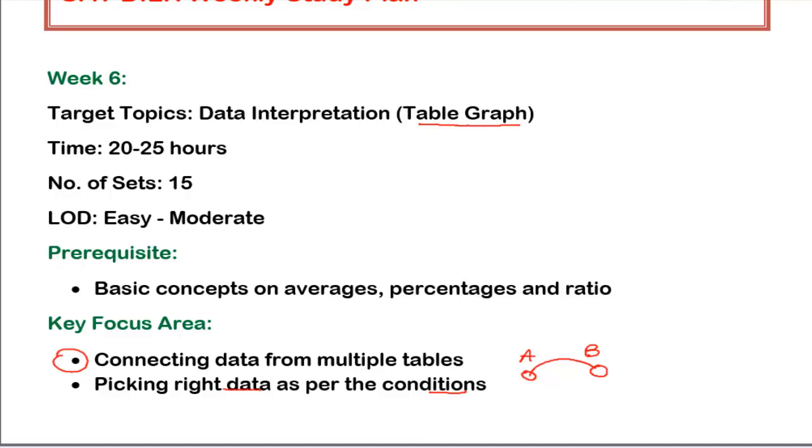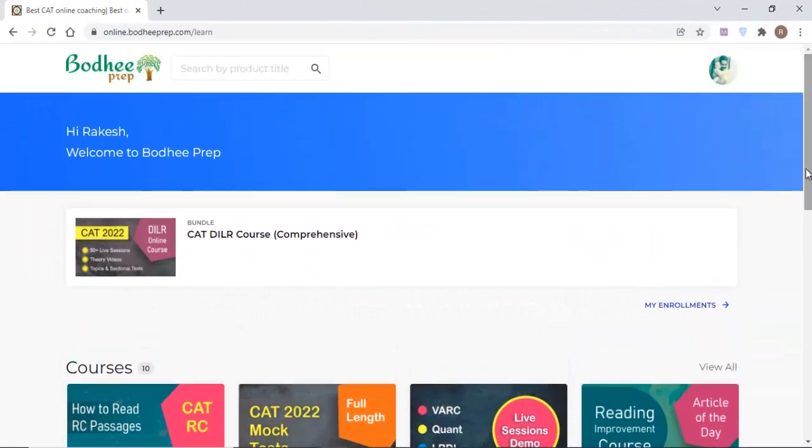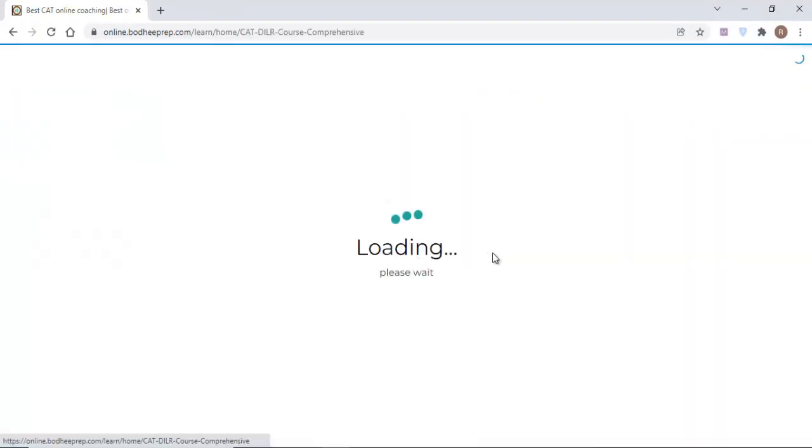So I have given enough sets on table graph because this is one of the important sets as I said from data interpretation in CAT. So let me just show you where you will be finding it. You have to go to the CAT DILR course folder.